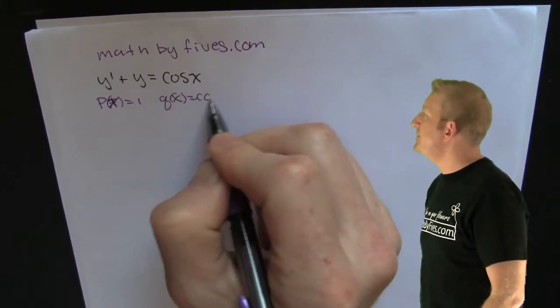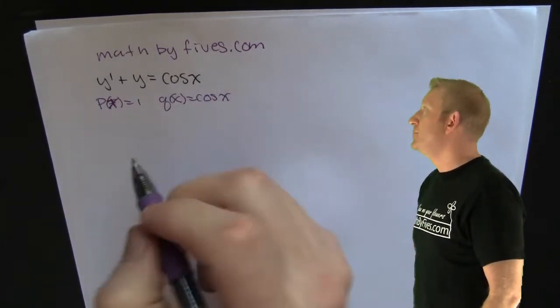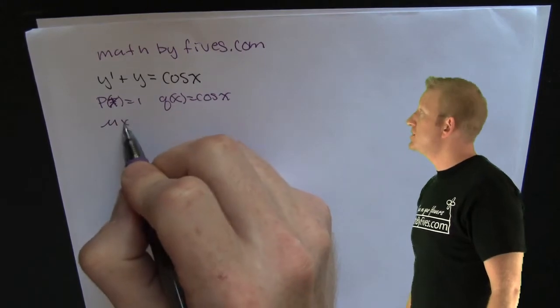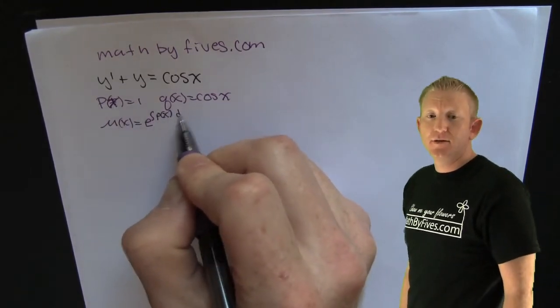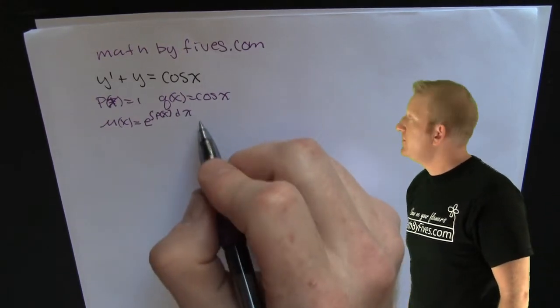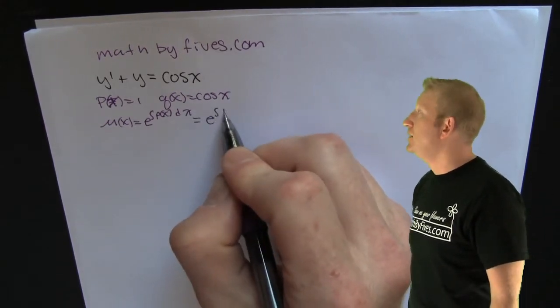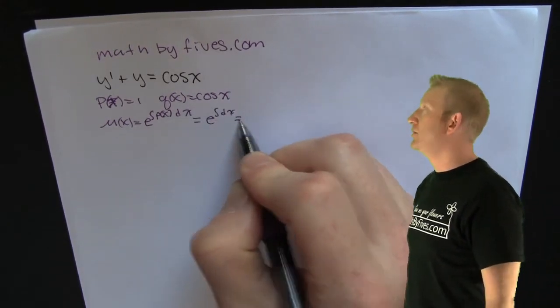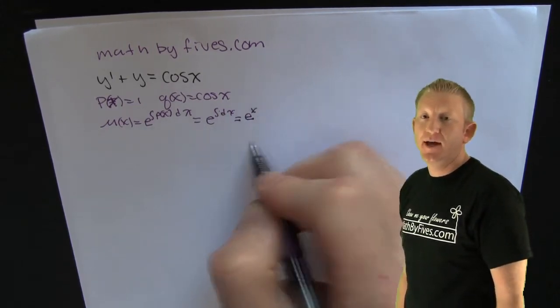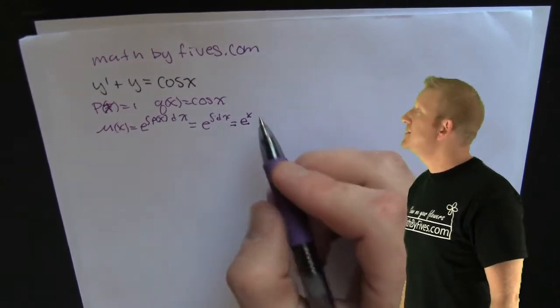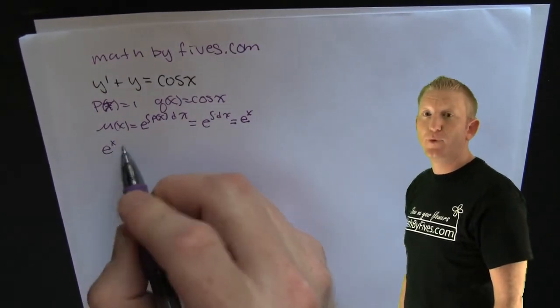What are we doing? We're identifying our p(x) and our q(x) because this is the form that we've been using to solve these linear differential equations. We're finding our integrating factor. We integrate e to the integral p(x) dx. Upon doing that, we find that it's e to the x. Oh boy.